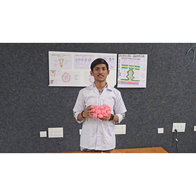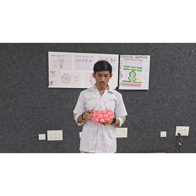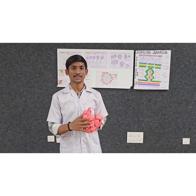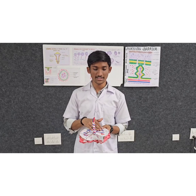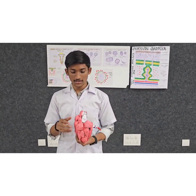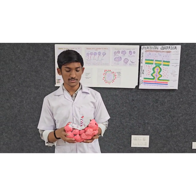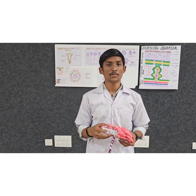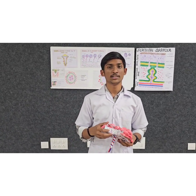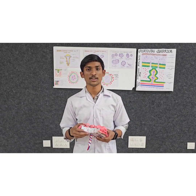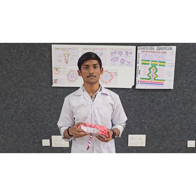Structure of placenta is divided into two components. The first component is towards the maternal surface and is known as the basal plane. The second component is towards the fetal surface and is known as the chorionic plane. Between the maternal and fetal surfaces, there is the presence of stem villi. Stem villi are further divided into three types: primary stem villi, secondary stem villi, and tertiary stem villi.